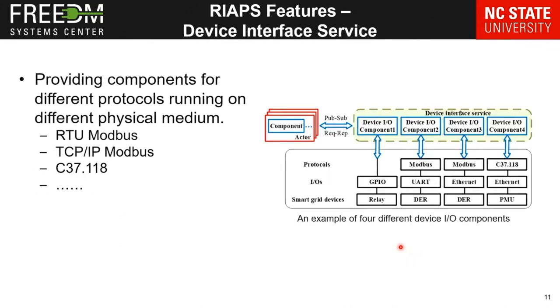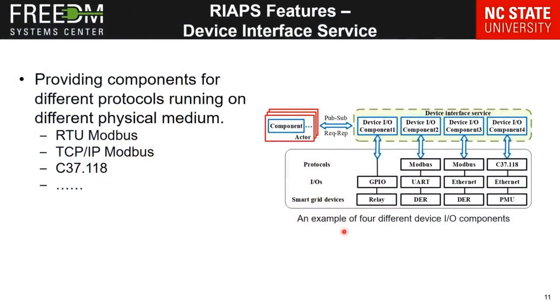The next feature is the device interface service. REAPS is used to control all kinds of devices in a smart grid, and smart grid devices usually use different communication protocols running on different physical media. For example, inverters commonly support Modbus messages defined by IEEE 1547, and phasor measurement units may use C37 phasor transfer protocol. REAPS device interface service implements those commonly used communication protocols as library components so application developers can use them directly, saving time to focus on their algorithms.